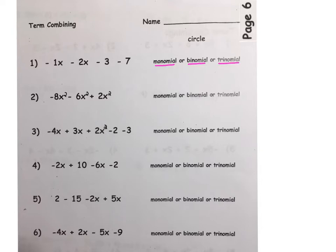Remember and please record this. A monomial has one type of term and that's it. A binomial has two distinct terms and a trinomial has three distinct terms.